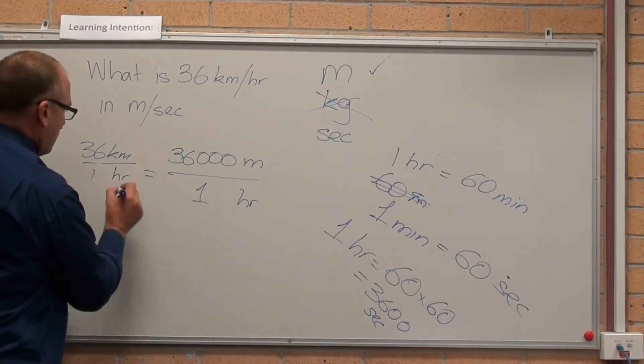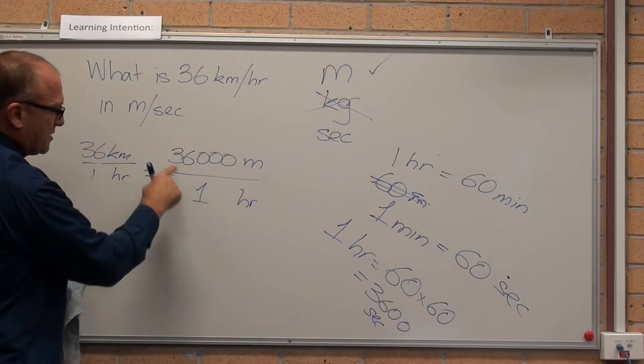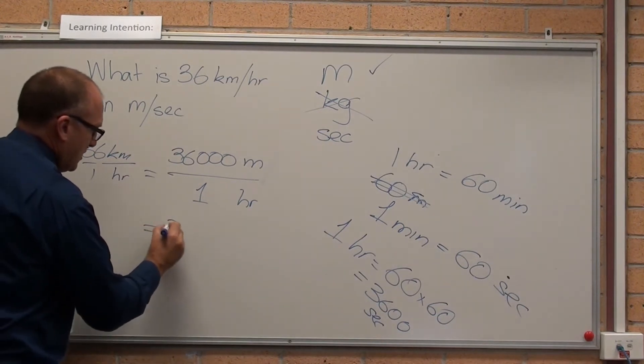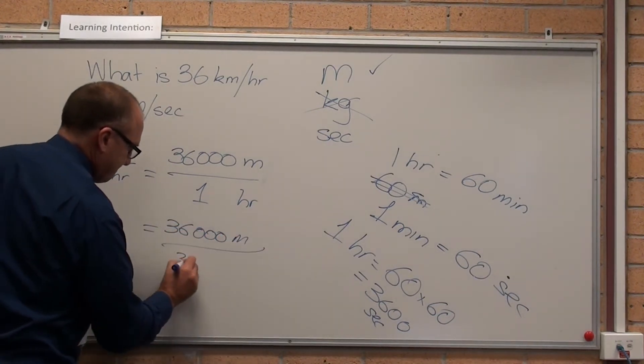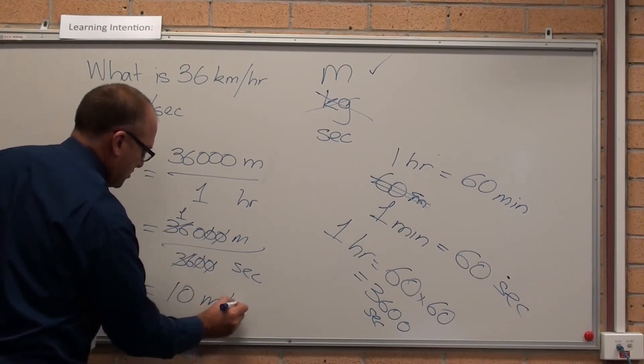So, 36 kilometres in one hour equals 36,000 metres in one hour, equals 36,000 divided by 3,600, equals 10 metres per second.